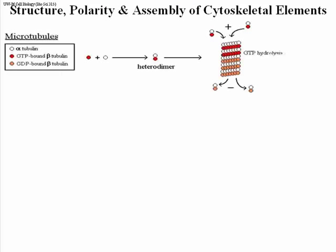Let's look at the structure, the polarity, and the assembly of cytoskeletal elements. Here we have microtubules. Microtubules are built from tubulin monomers. One of the monomers, the beta-tubulin monomer, actually binds GTP — that's the red ball. A heterodimer forms when an alpha and a GTP-bound beta come together, and microtubules are formed by the aggregation of these heterodimers containing GTP, at least to start with.